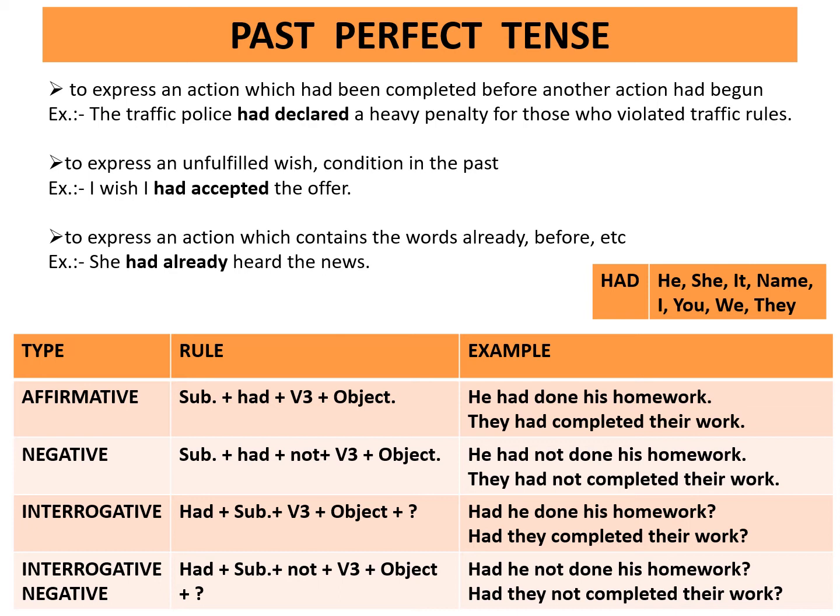Interrogative negative rule: had plus subject plus not plus third form of the verb plus object plus question mark. Example: Had he not done his homework? Had they not completed their work?